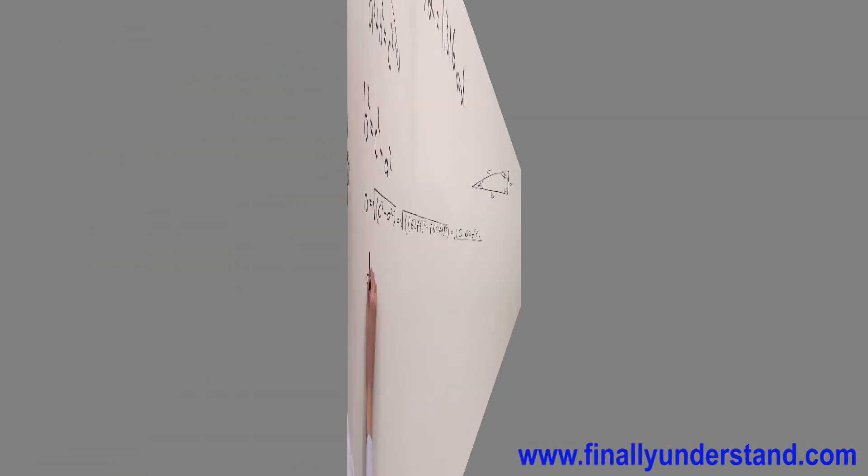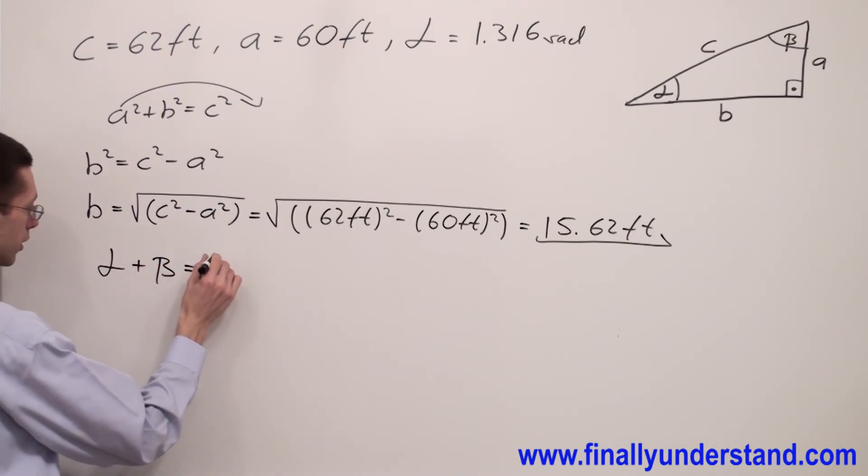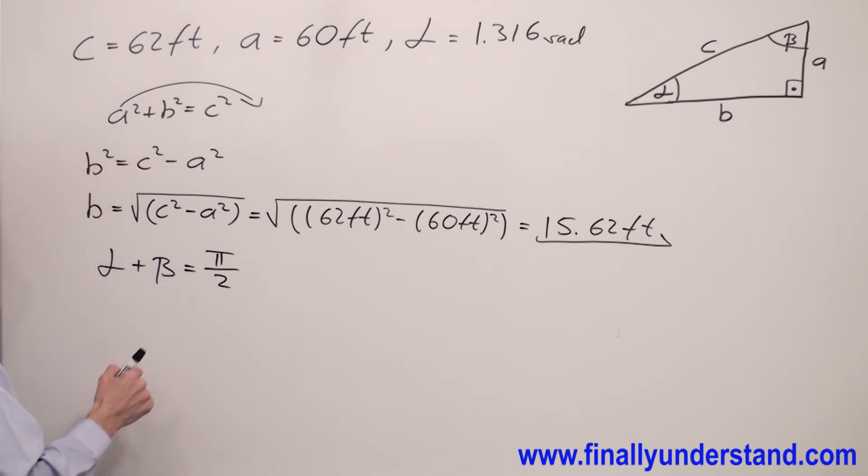Next, alpha plus beta equals pi over 2, because we're talking in terms of radians. In order to find angle beta, I'm supposed to move alpha to the right side.